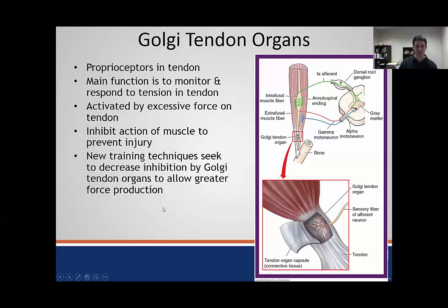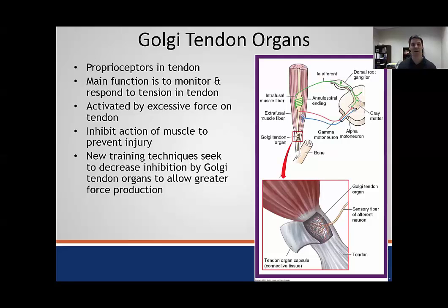There are some new training techniques where the idea is to decrease the inhibition of force that GTOs are trying to send. The GTO senses force, sends a message through its afferent neuron into the central nervous system, which then sends an inhibitory synapse into the alpha motor neuron to stop the extrafusal fibers from contracting. If you can prevent that inhibition, then you can potentially increase performance.